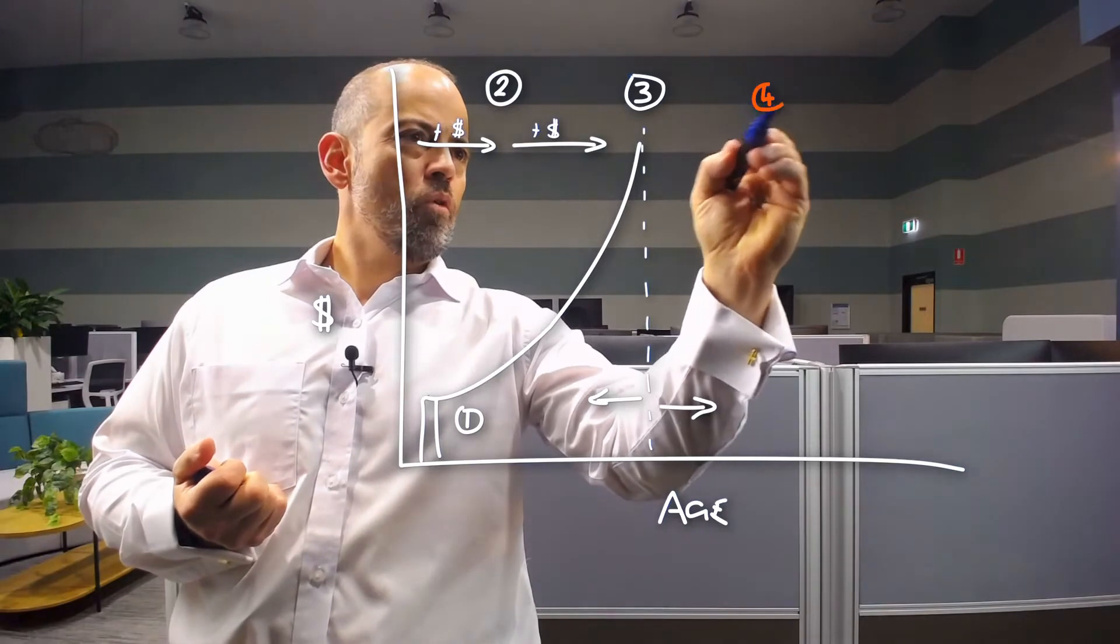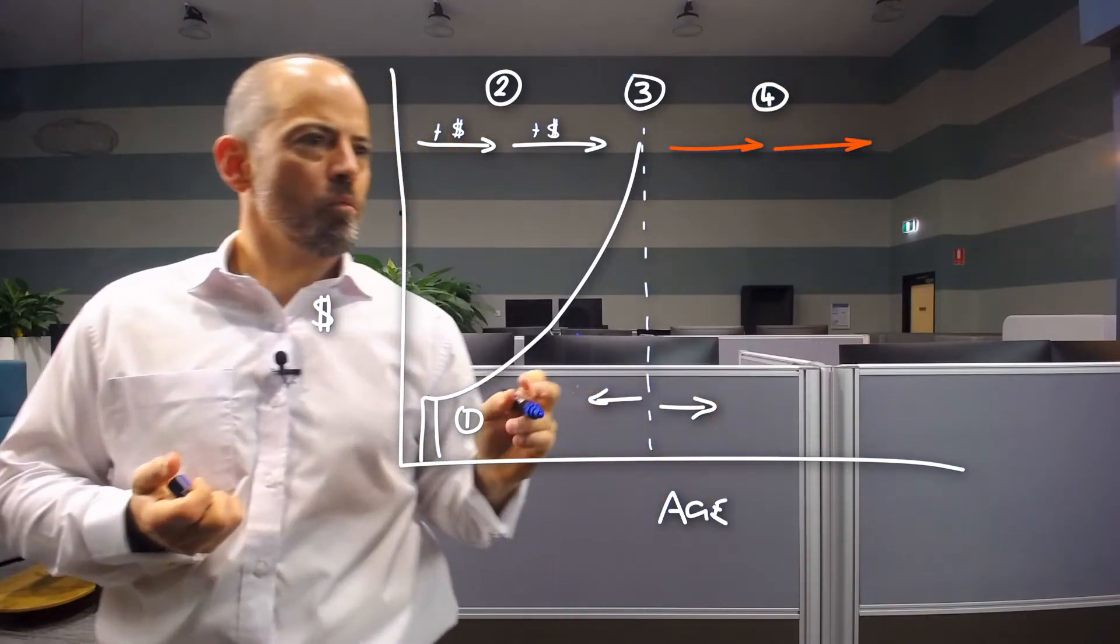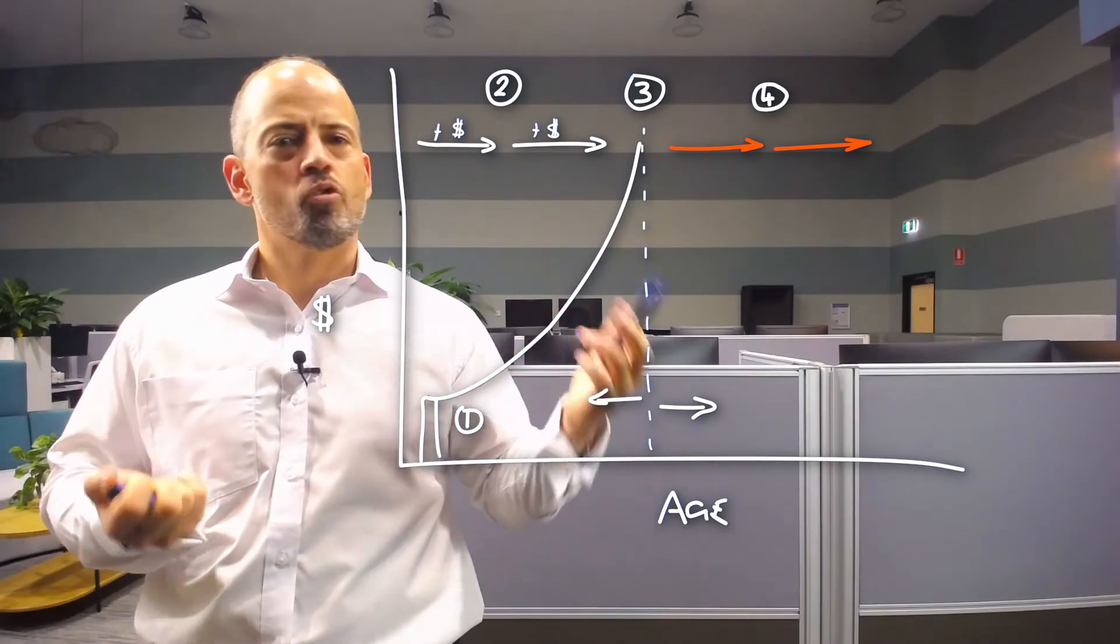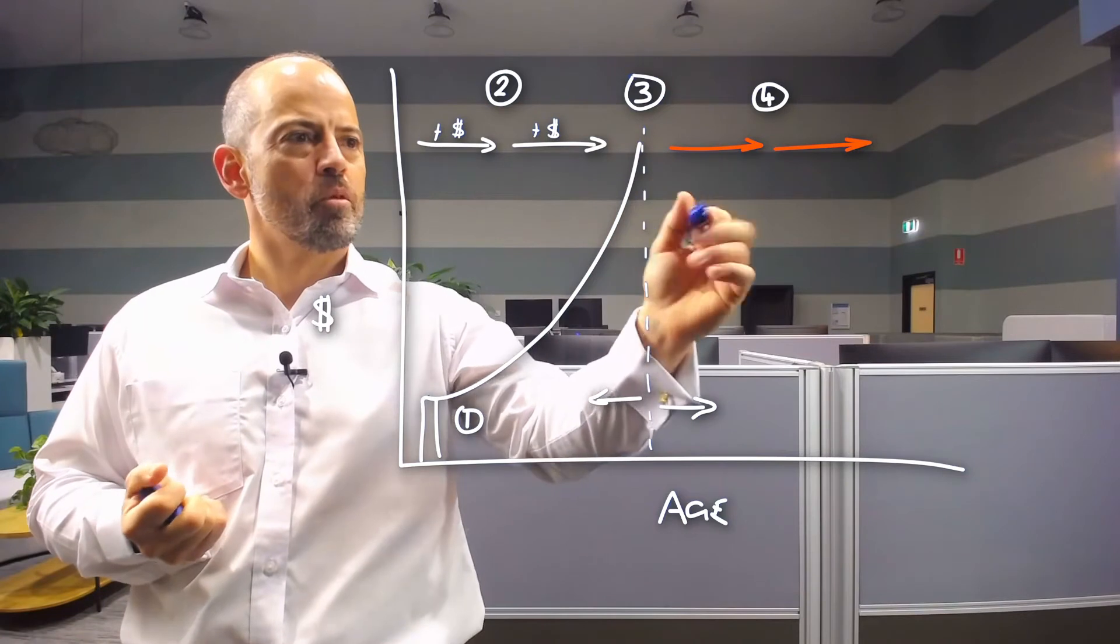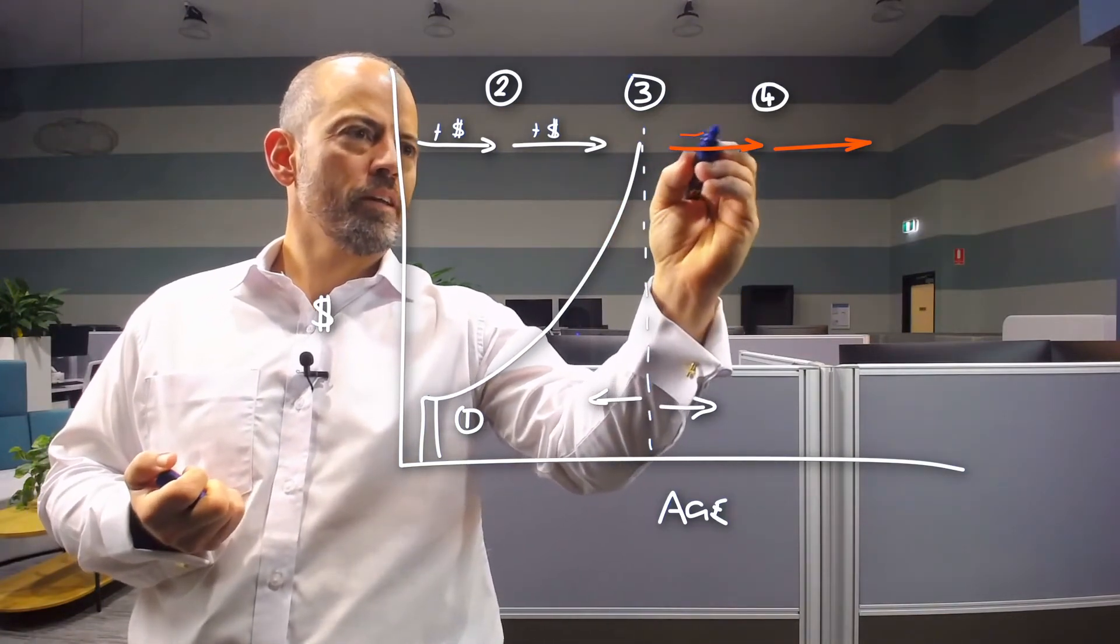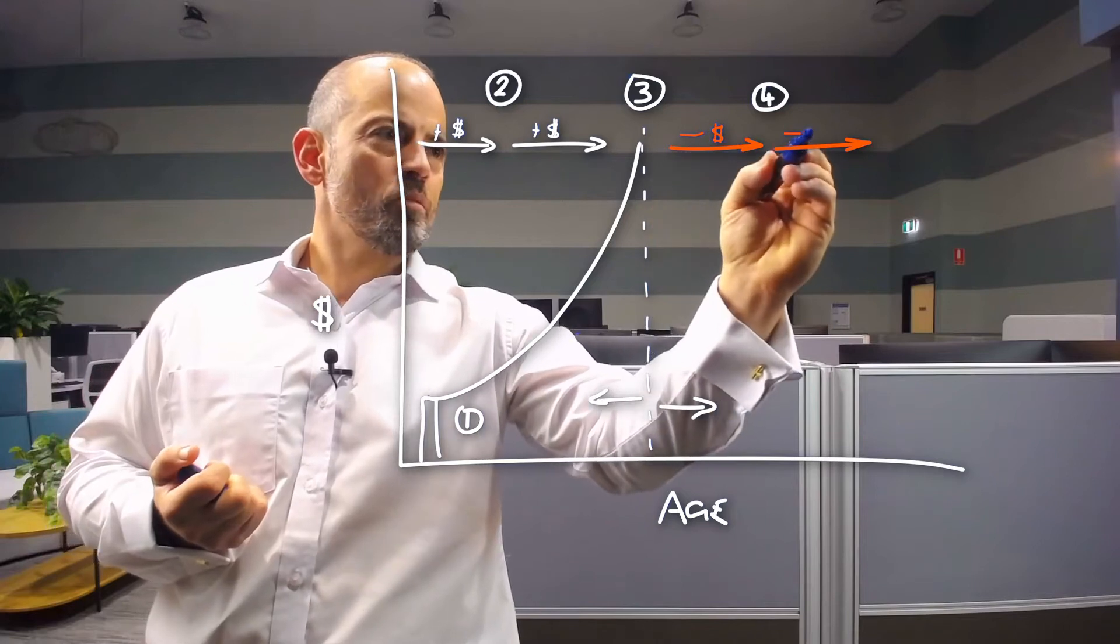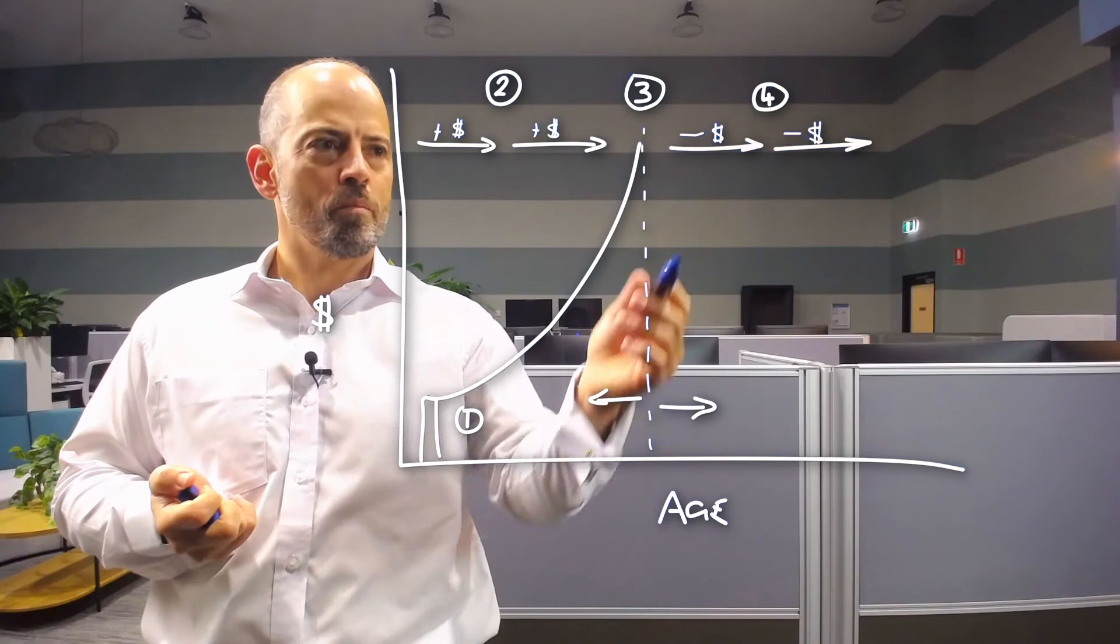The next variable, variable number four, is at what rate do I need to draw down my capital? At what income, what income stream do I need to draw down once I slow down my work and then stop work?